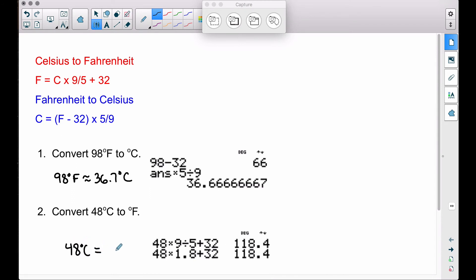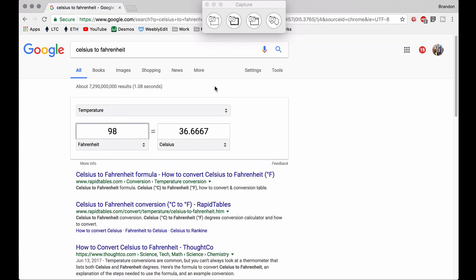Let's look at Google to check our work. At Google, you can type in Celsius to Fahrenheit or vice versa, and you can change your drop-down menus if you need to. But 98 degrees Fahrenheit is roughly 36.7 degrees Celsius.